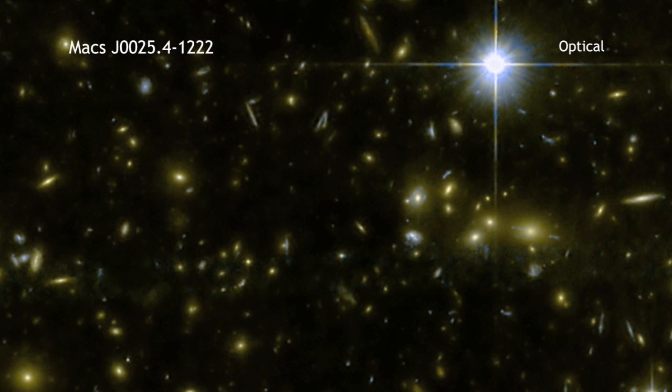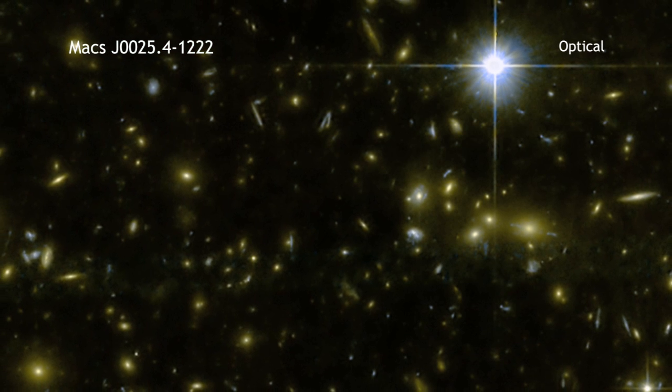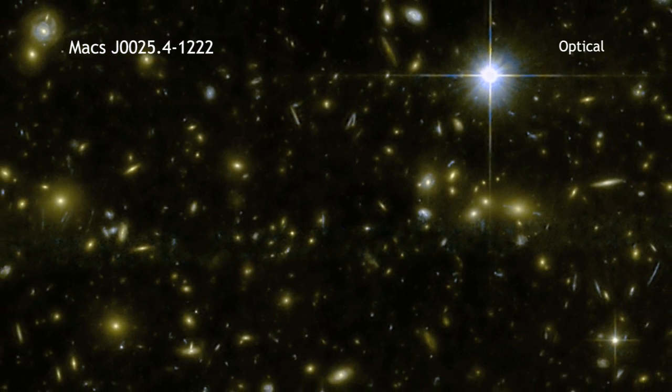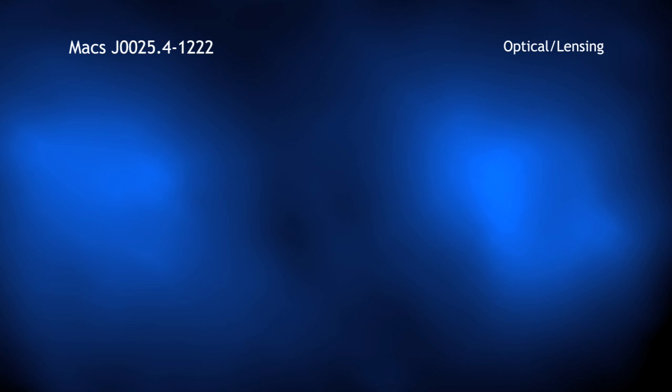Optical images from Hubble were used to infer the distribution of the total mass, which includes dark matter, using a technique known as gravitational lensing. This is seen as blue in the image.